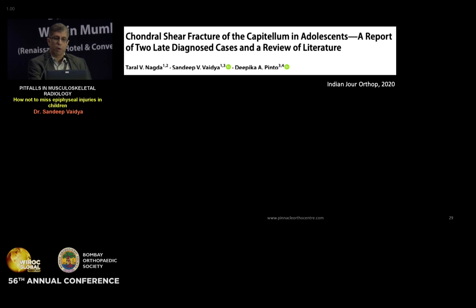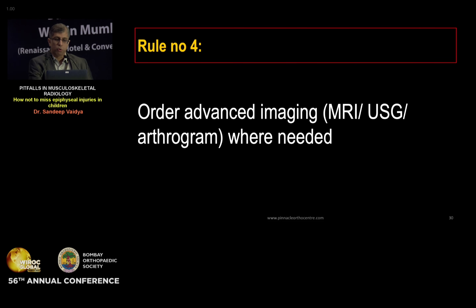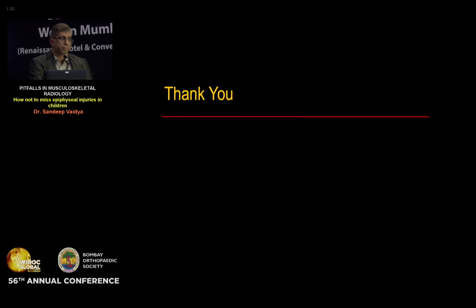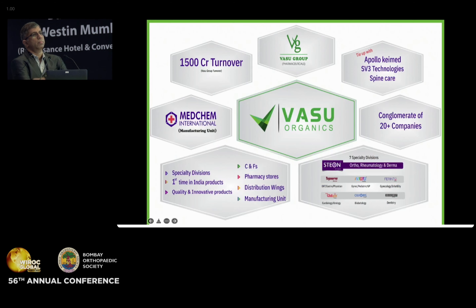One described TRASH lesion is a chondral shear fracture of the capitellum, impossible to diagnose on X-rays because the fracture fragment is completely cartilaginous. Rule number four: order advanced imaging where needed. In conclusion: obtain appropriate radiographic views, consider injury through unossified cartilage, be aware of normal variants, and obtain advanced imaging when indicated. Thank you.